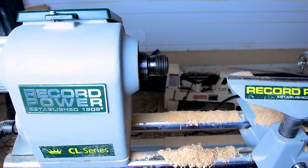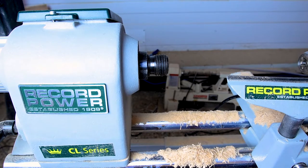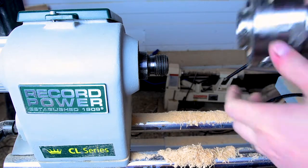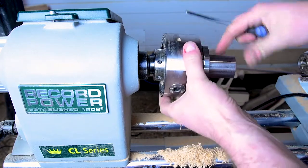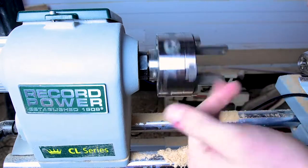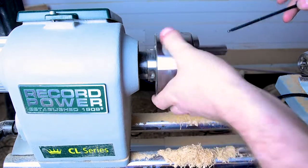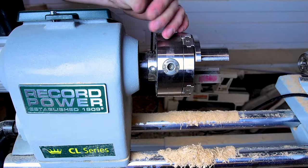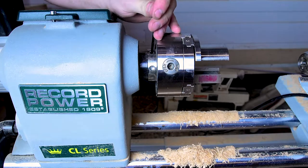We have a Record Power CL3 lathe which is a fairly beginner model lathe. That does pretty much everything we want. It's not variable speed. It's just a set of pulleys. So you get that on reasonably tight. Lock down the grub screw just to make sure it doesn't go wandering off on us.